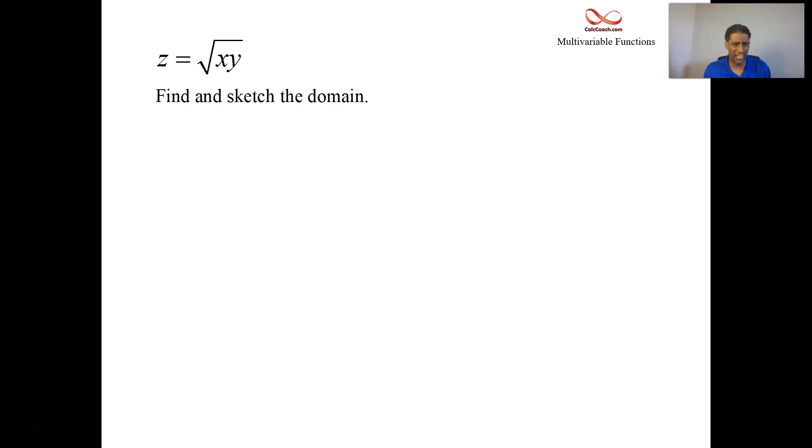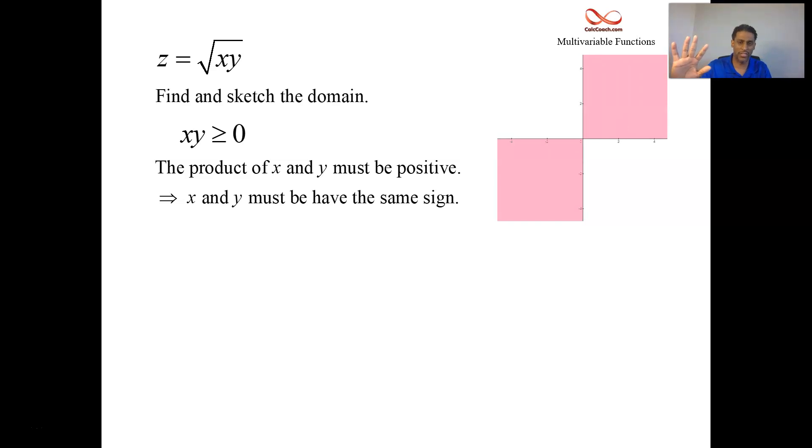But we can't have the product of X and Y being negative. The product of them must be positive. When you're doing domain, we'll be shading a region in the XY plane where your function exists and then the height off the XY plane is the Z value. X and Y must have the same sign. That means you're in the first quadrant where X and Y are both positive, or you're in the third quadrant where X and Y are both negative. This function only exists for these X values and Y values.